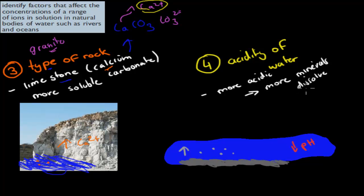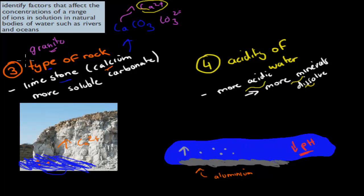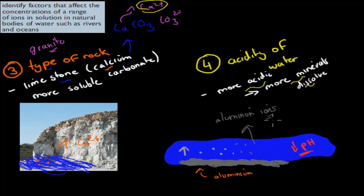Another thing that can change the concentration of different ions is the acidity of water, because generally the more acidic the solution, the more minerals will dissolve into their components. A good example would be aluminium. We have some rocks or minerals that have aluminium inside them. As the solution becomes more acidic — so pH goes down — more and more aluminium particles dissolve and become aluminium ions. The concentration of aluminium ions increases in the ocean because the pH has decreased, making the aluminium more easily dissolved from the mineral and into the water.